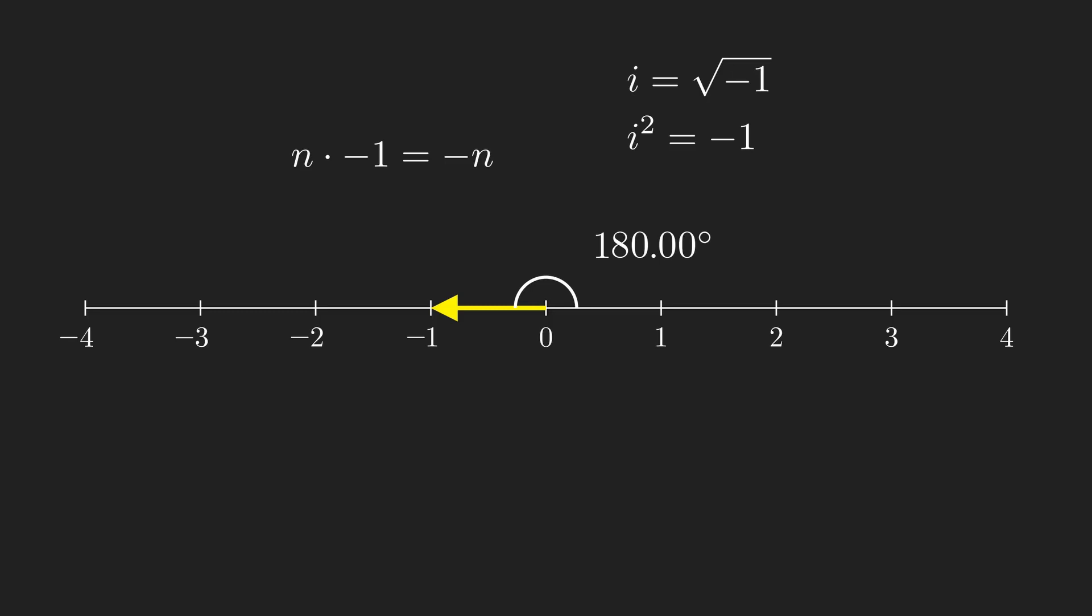Perhaps then, the square root of negative 1 should be half the rotation of negative 1, making i a 90 degree rotation. Similarly, negative i must be 180 degrees from i. This appears to create a new axis.